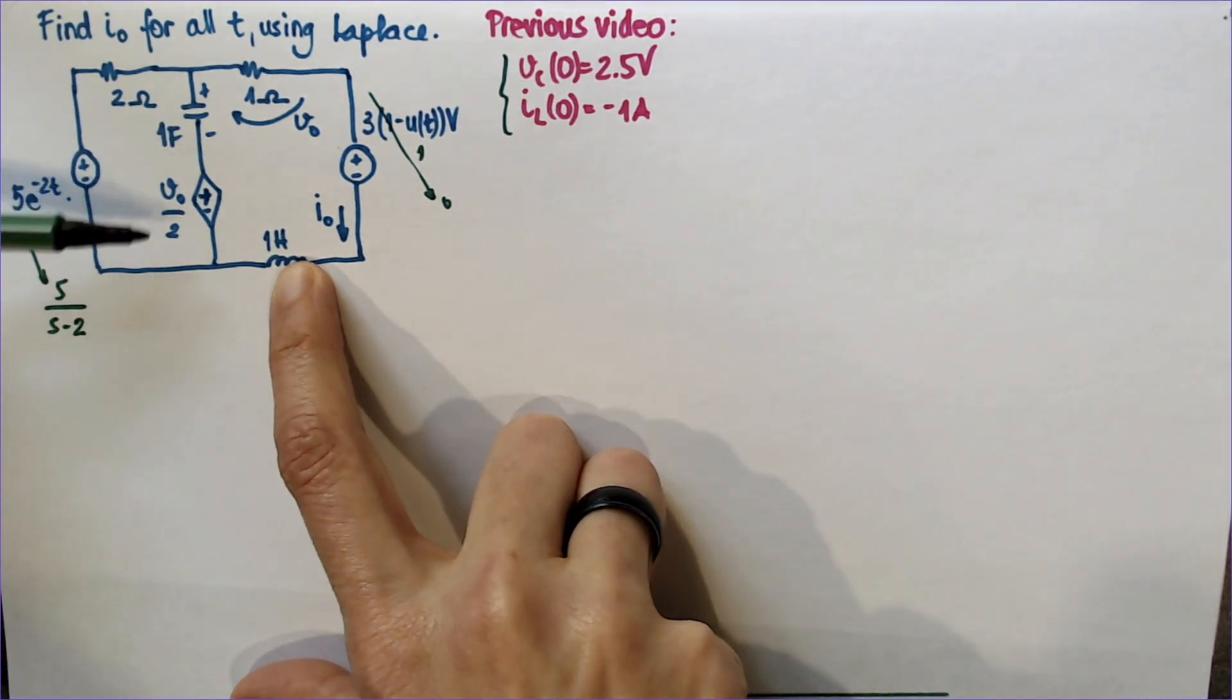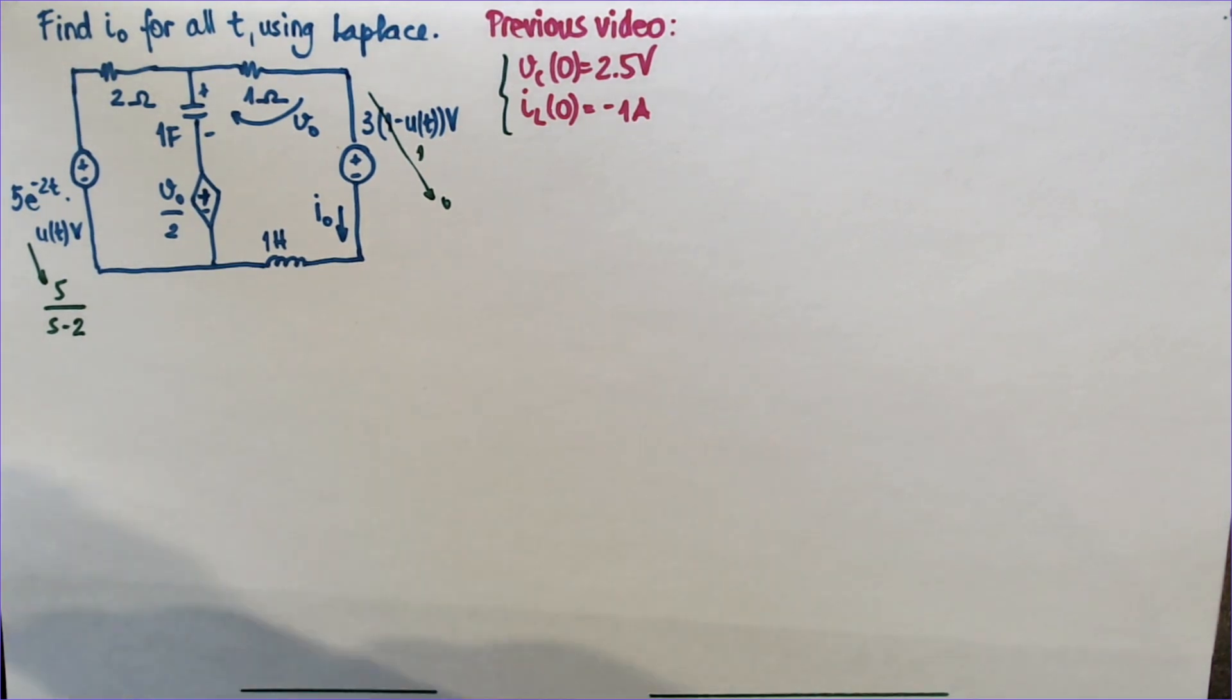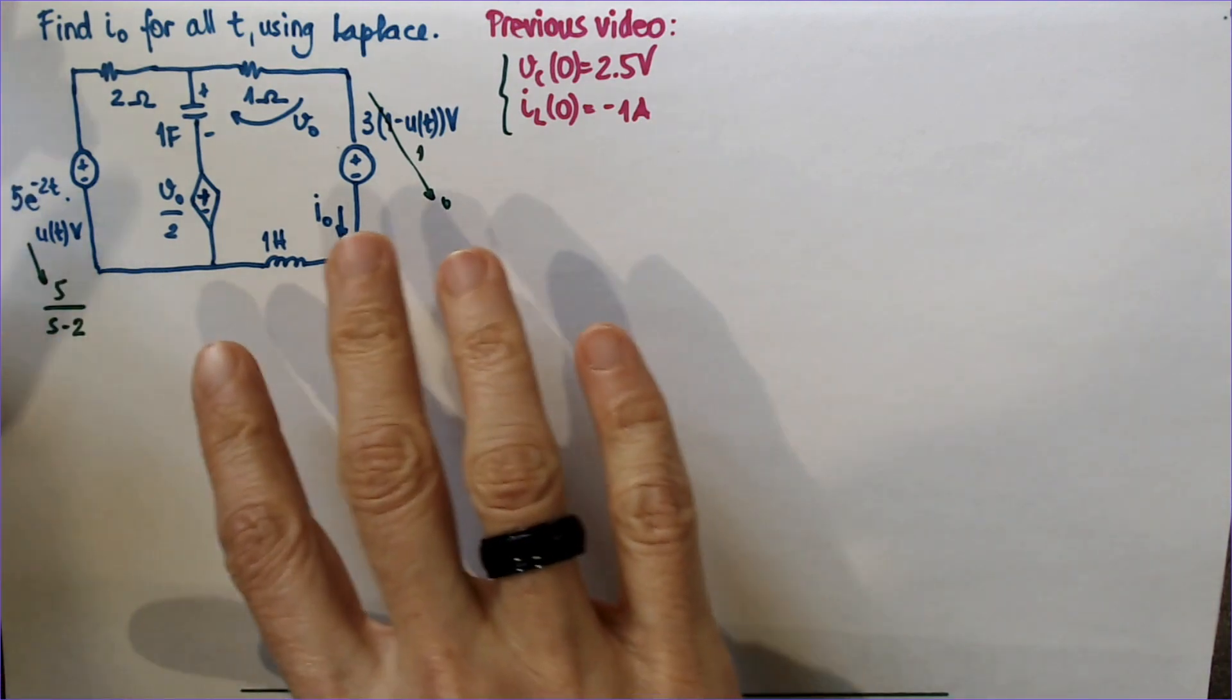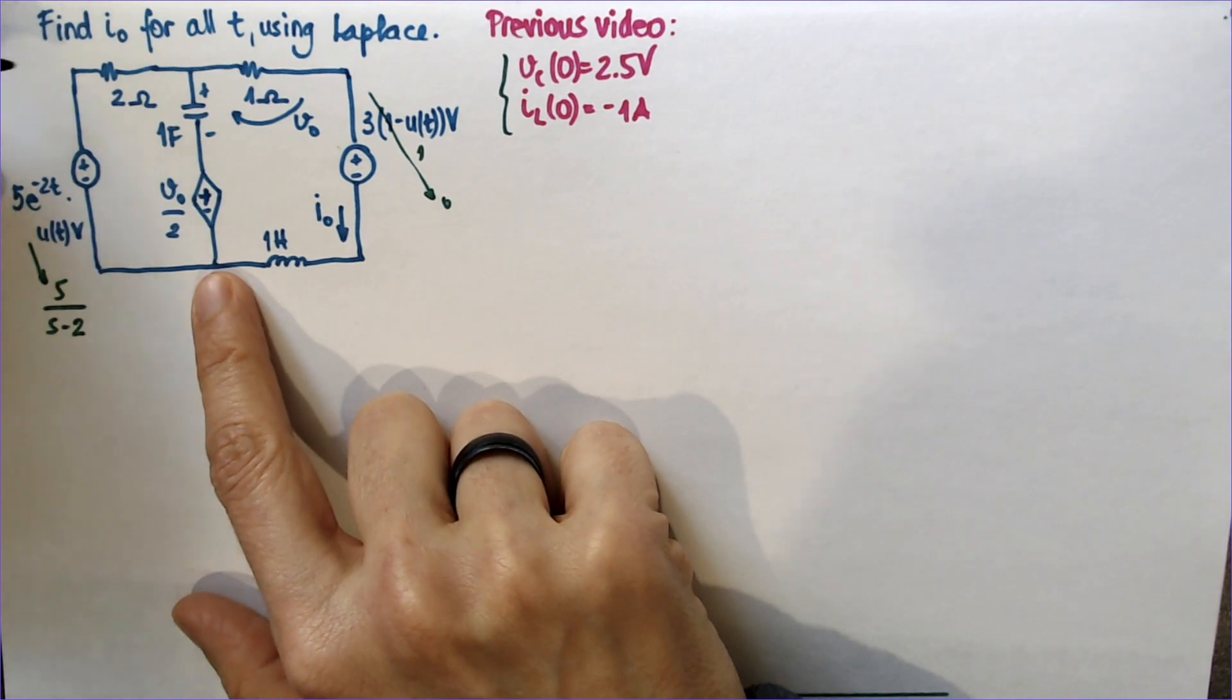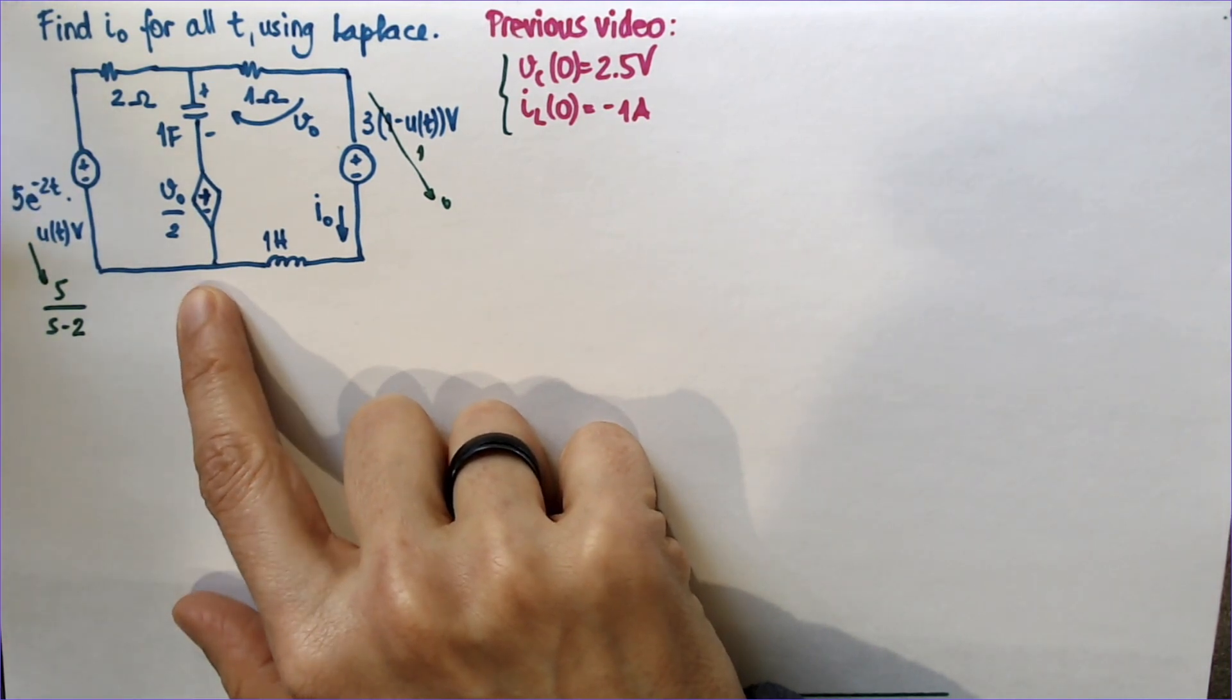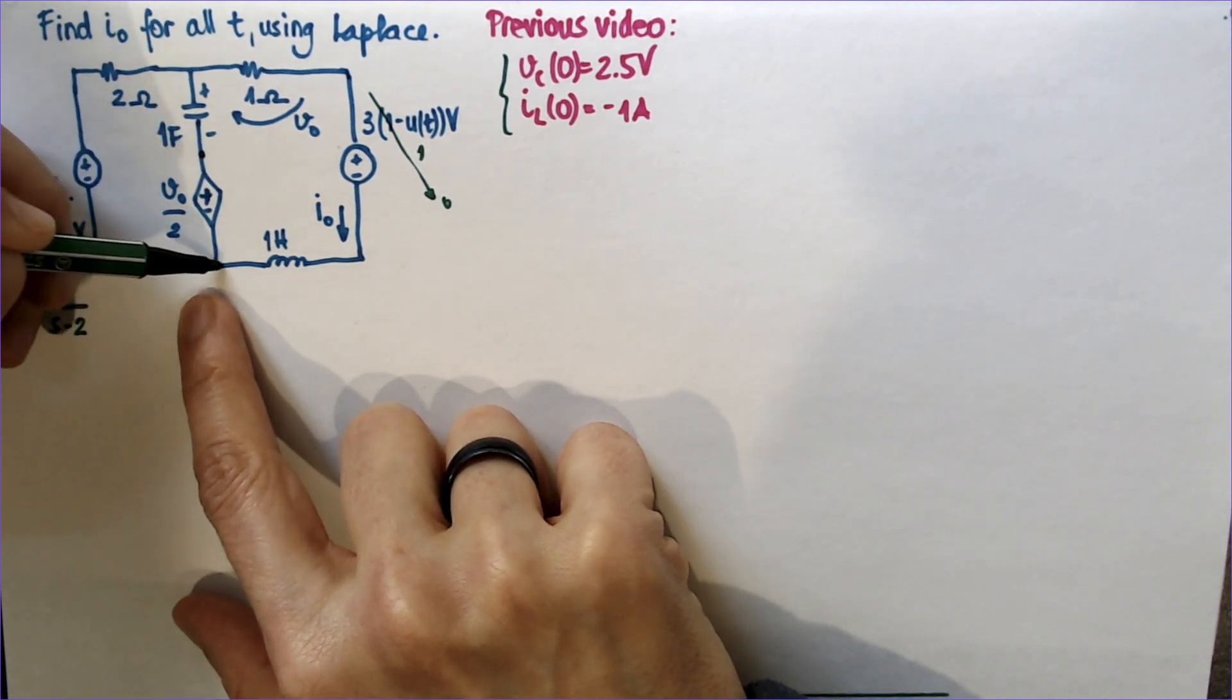And now we see here, this is where the nodal versus mesh analysis comes into play. Midterm two, the second question on power, a lot of people used mesh analysis and got in trouble because they had four equations. So that was a nodal analysis question actually. This one, however, has two meshes.